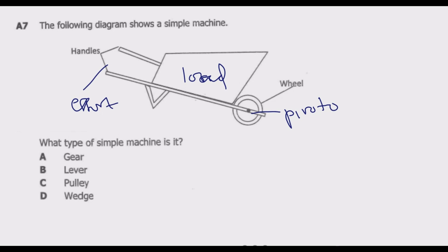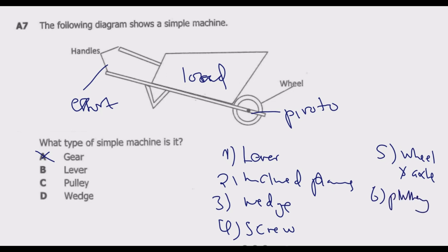So let us see the options. We have A gear. So gear is not part of the 6 machines. The 6 machines are basically: 1. The lever. 2. You have inclined planes. 3. You have wedge. 4. You have screw. 5. You have wheel and axle. And lastly 6. You have a pulley. So these are the 6 types of simple machines.